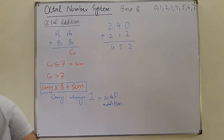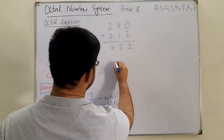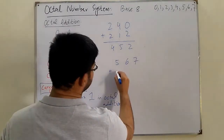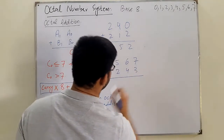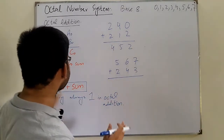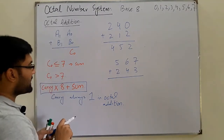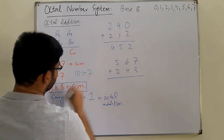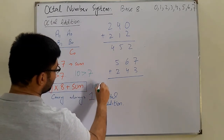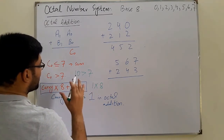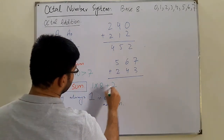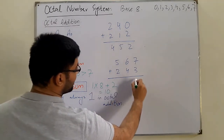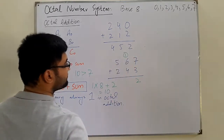Second example with carries: 567 plus 243. Now, 7 plus 3 equals 10. Since 10 is greater than 7, we split it: 1 multiplied by 8 plus 2 equals 10. So 2 is the sum and 1 is the carry.